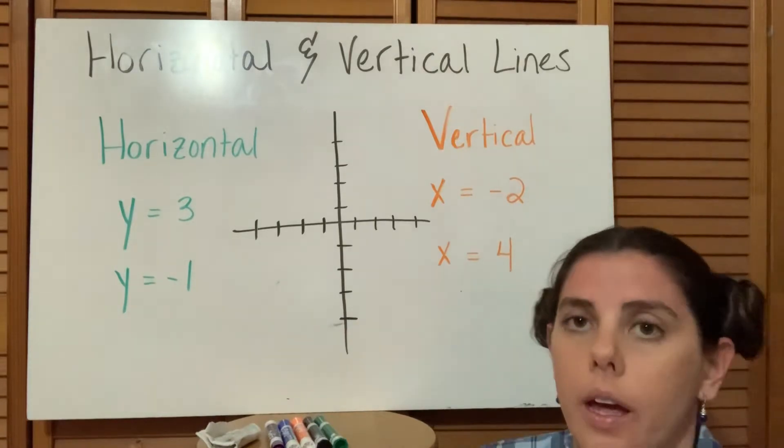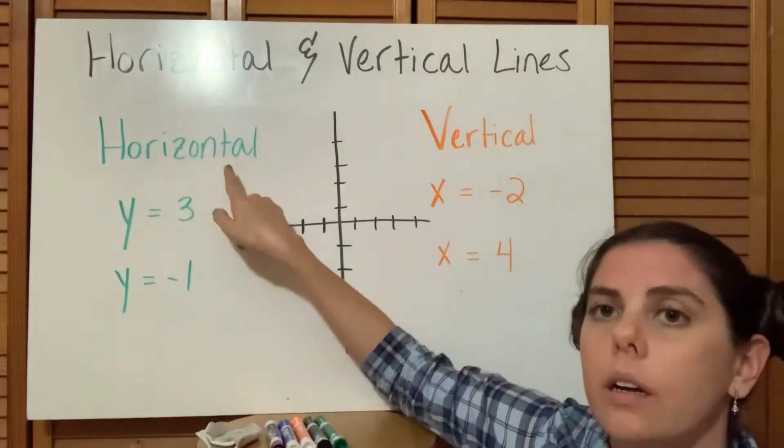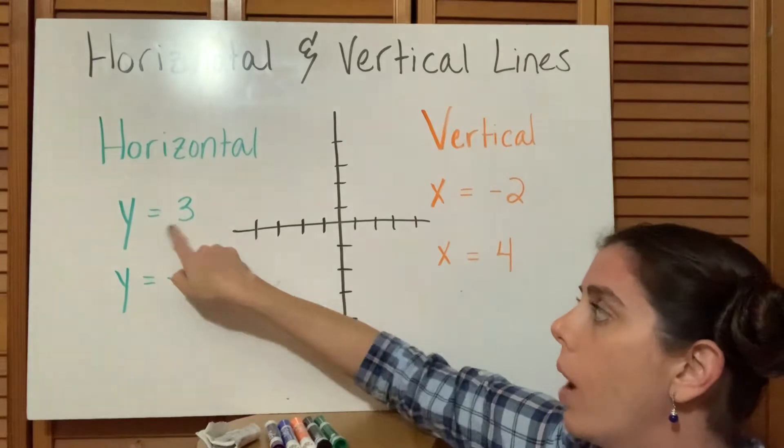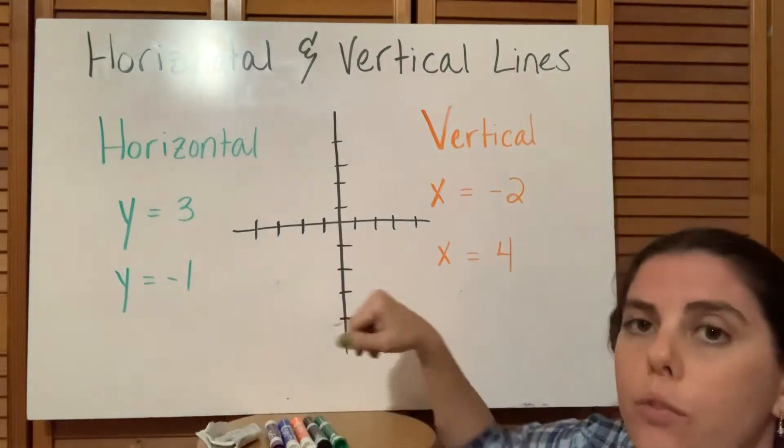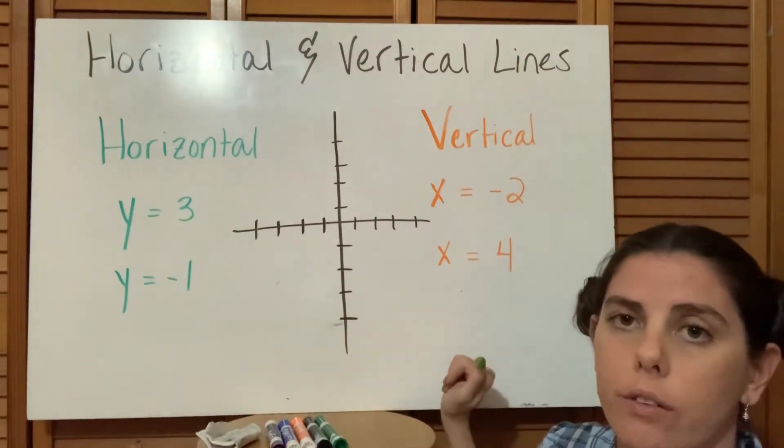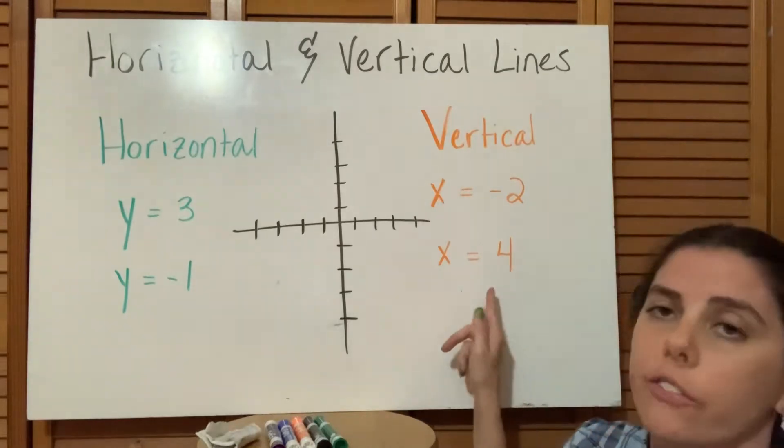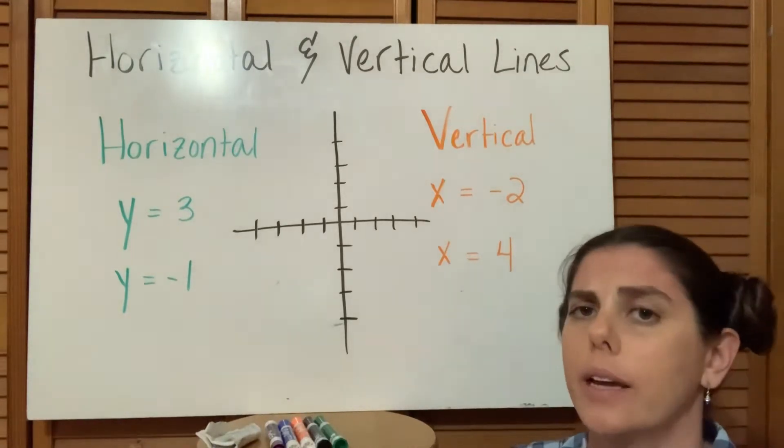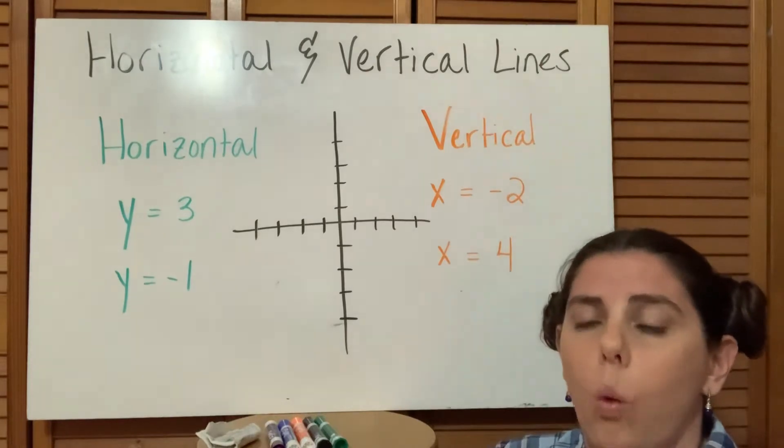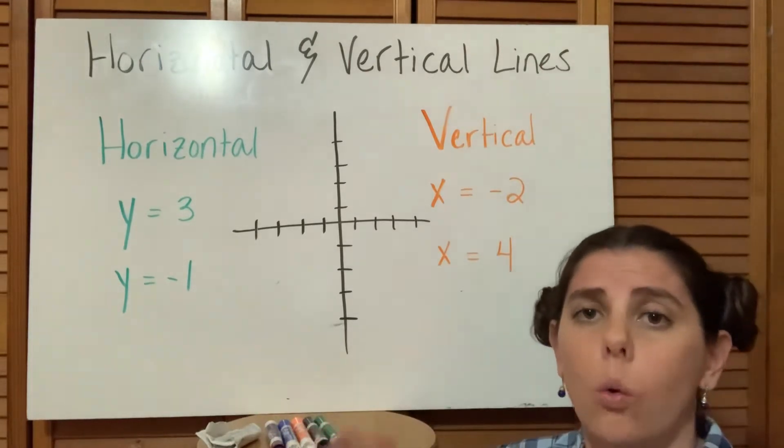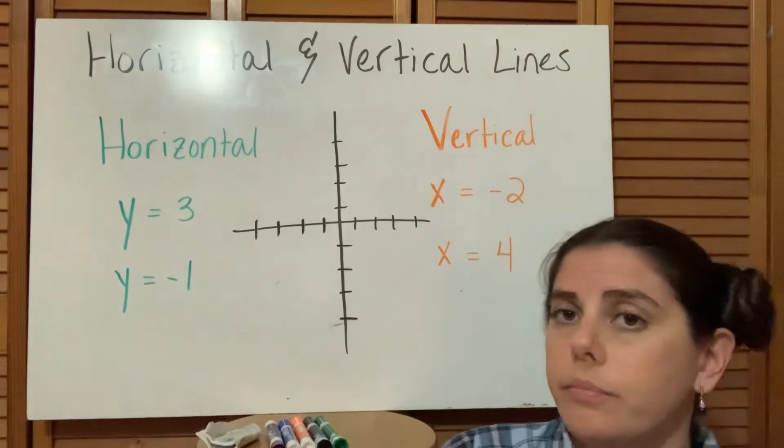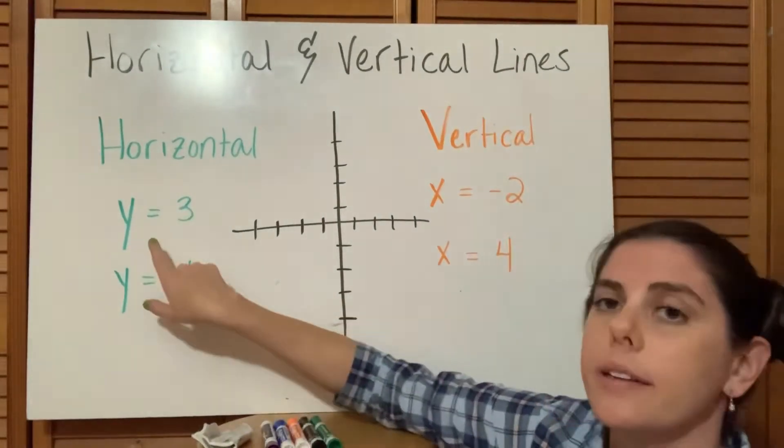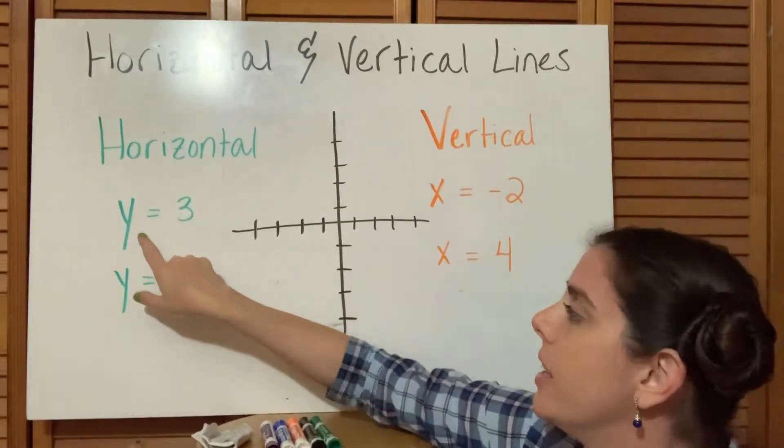I have a couple examples here. In green we have our horizontal: y equals 3, y equals negative 1. And then on the other side we have our vertical: x equals negative 2 and x equals 4. We'll plot those and try to help you understand why these are horizontal and vertical lines.